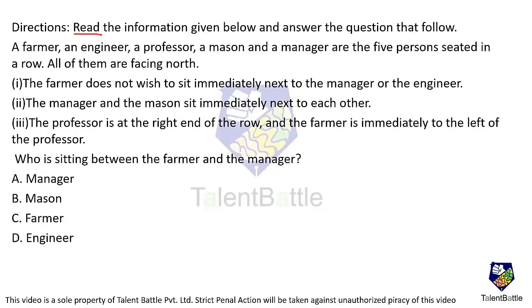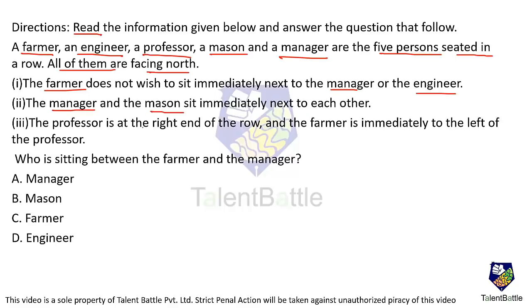Read the information given below and answer the question that follows. A farmer, an engineer, a professor, a mason, and a manager are 5 persons seated in a row. All of them are facing north. The farmer doesn't wish to sit immediately next to the manager or the engineer. The manager and the mason sit immediately next to each other. The professor is at the right end of the row, and the farmer is immediately to the left of the professor. Now there are 5 people total — let me place them.